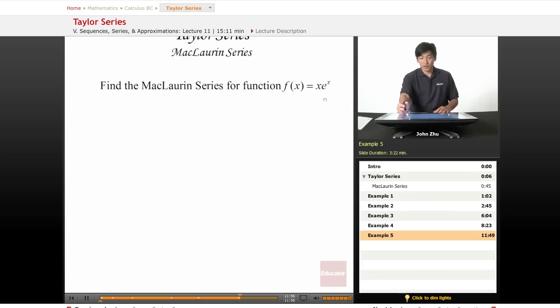So finding the Maclaurin series of the function x times e to the x. Now on the AP exam, they might ask you some variation of this, like f of x equals x times e to the negative x, or f of x equals 2x e to the negative 2x.